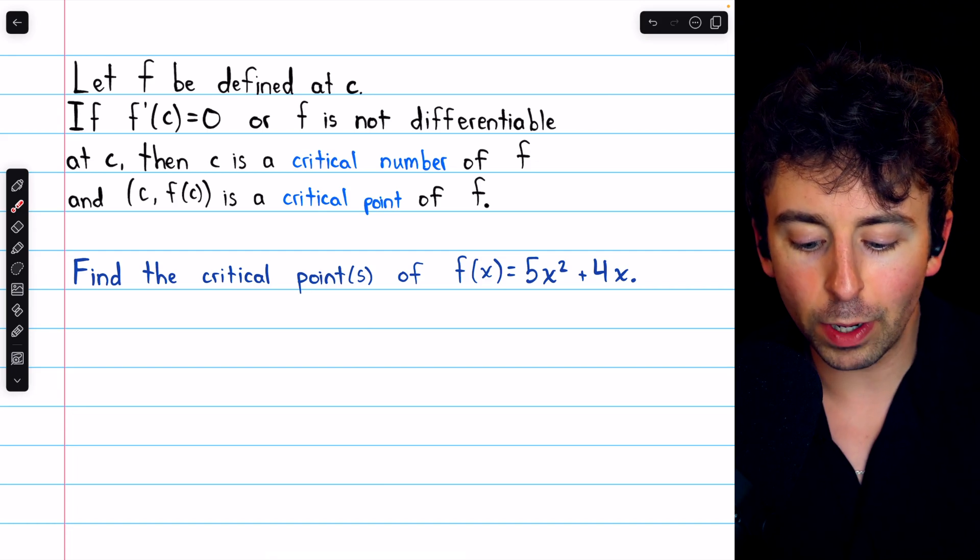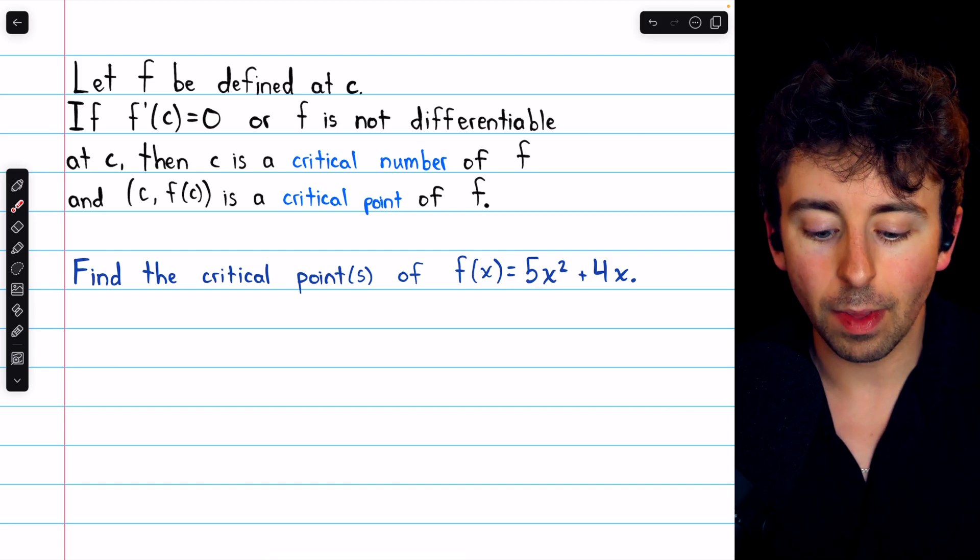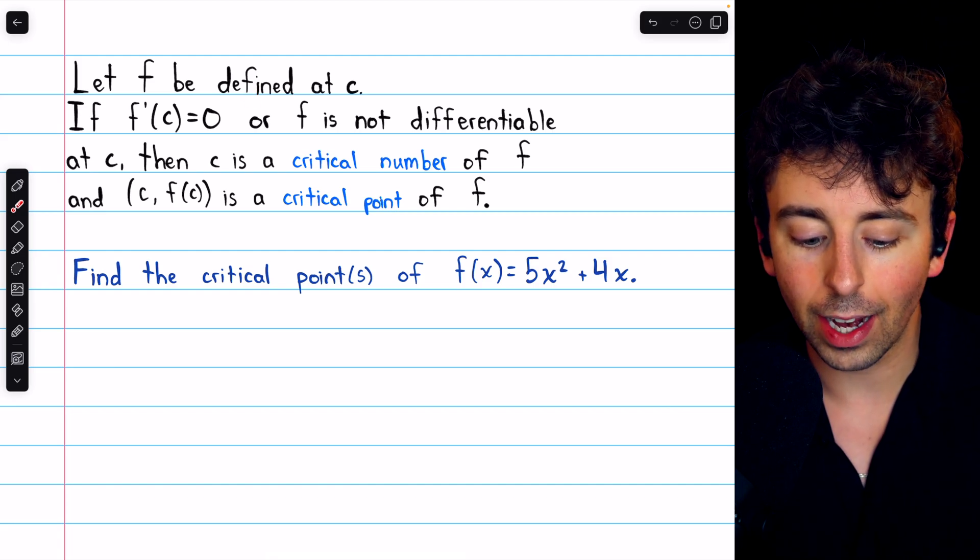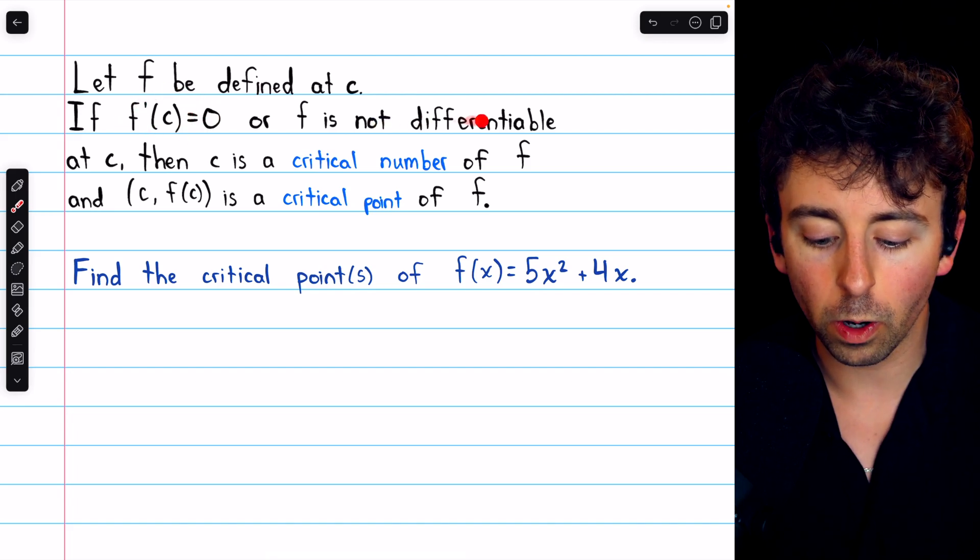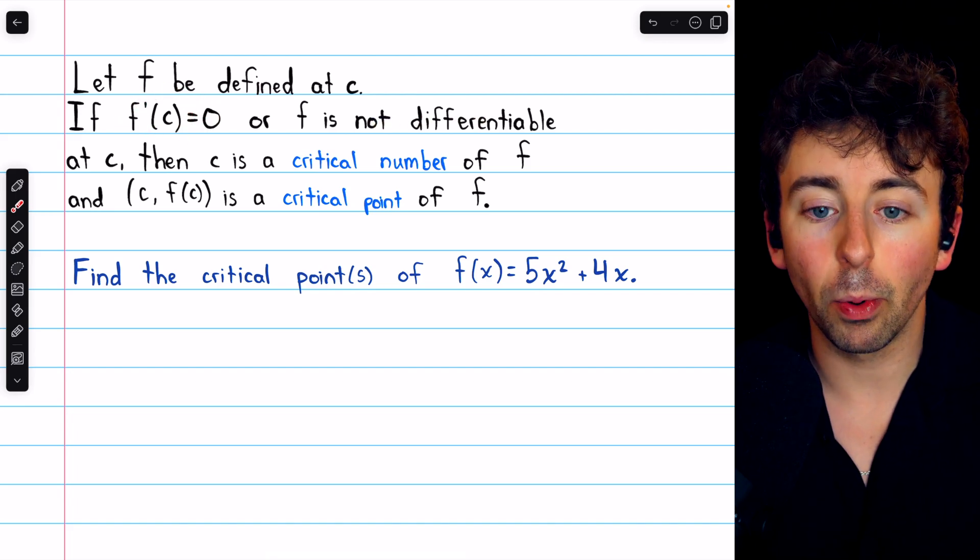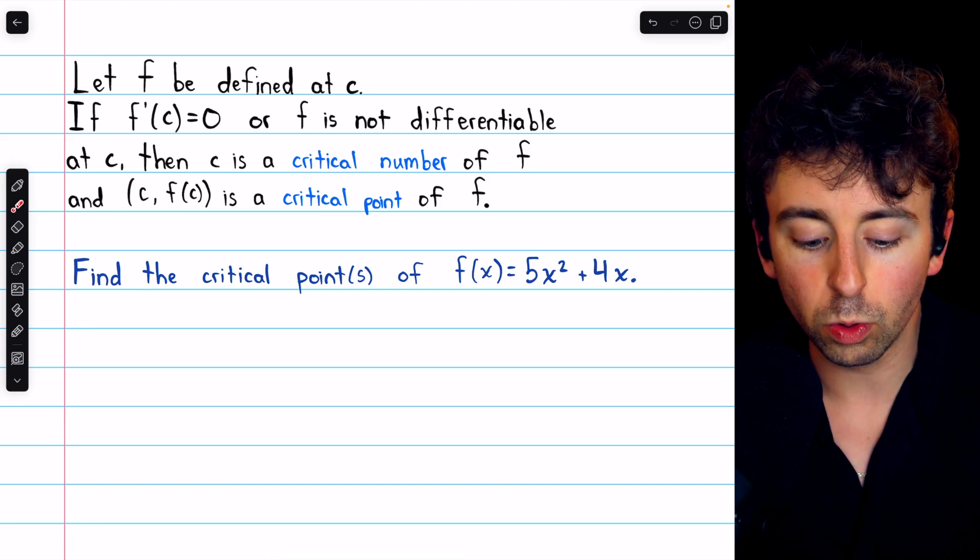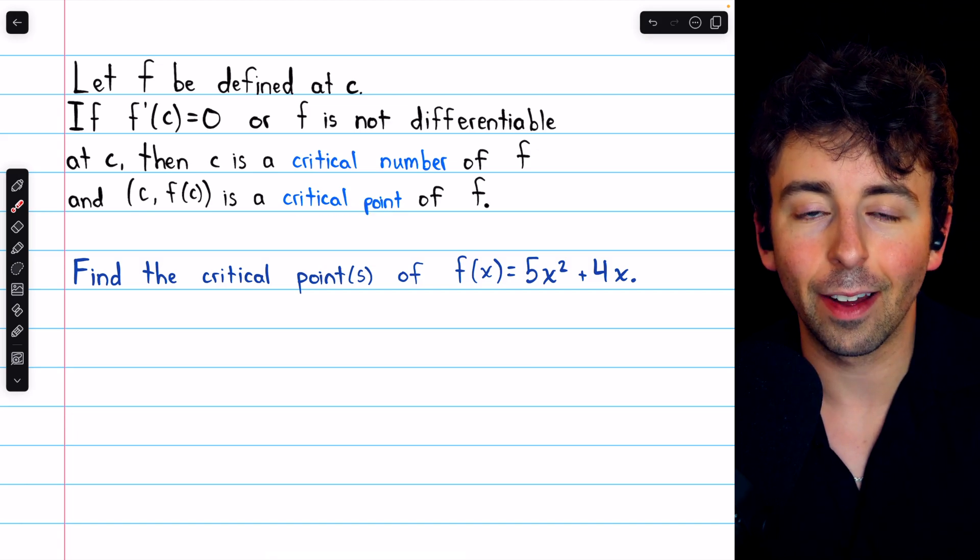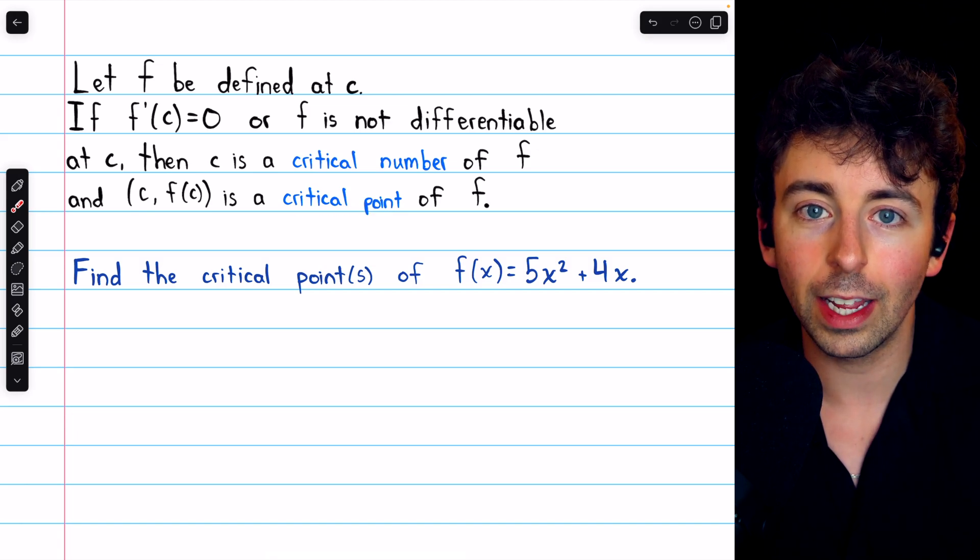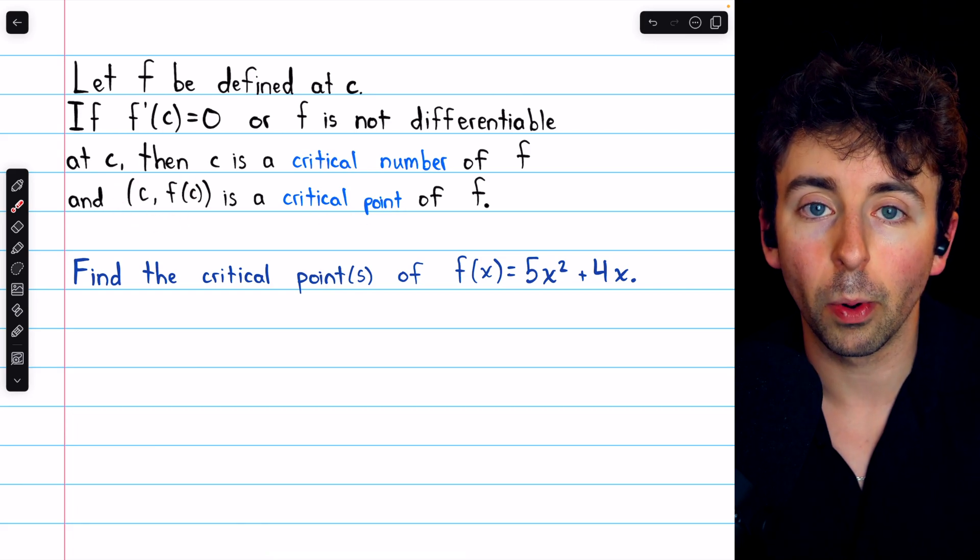Recall that a critical number of a function f is a number c at which f is defined, and where f's derivative is either 0 or doesn't exist. That point c is called a critical number, and then the ordered pair whose coordinates are c, f(c), is a critical point of f. So c is just the x coordinate, but if we get the x and the y coordinate, that's a critical point.